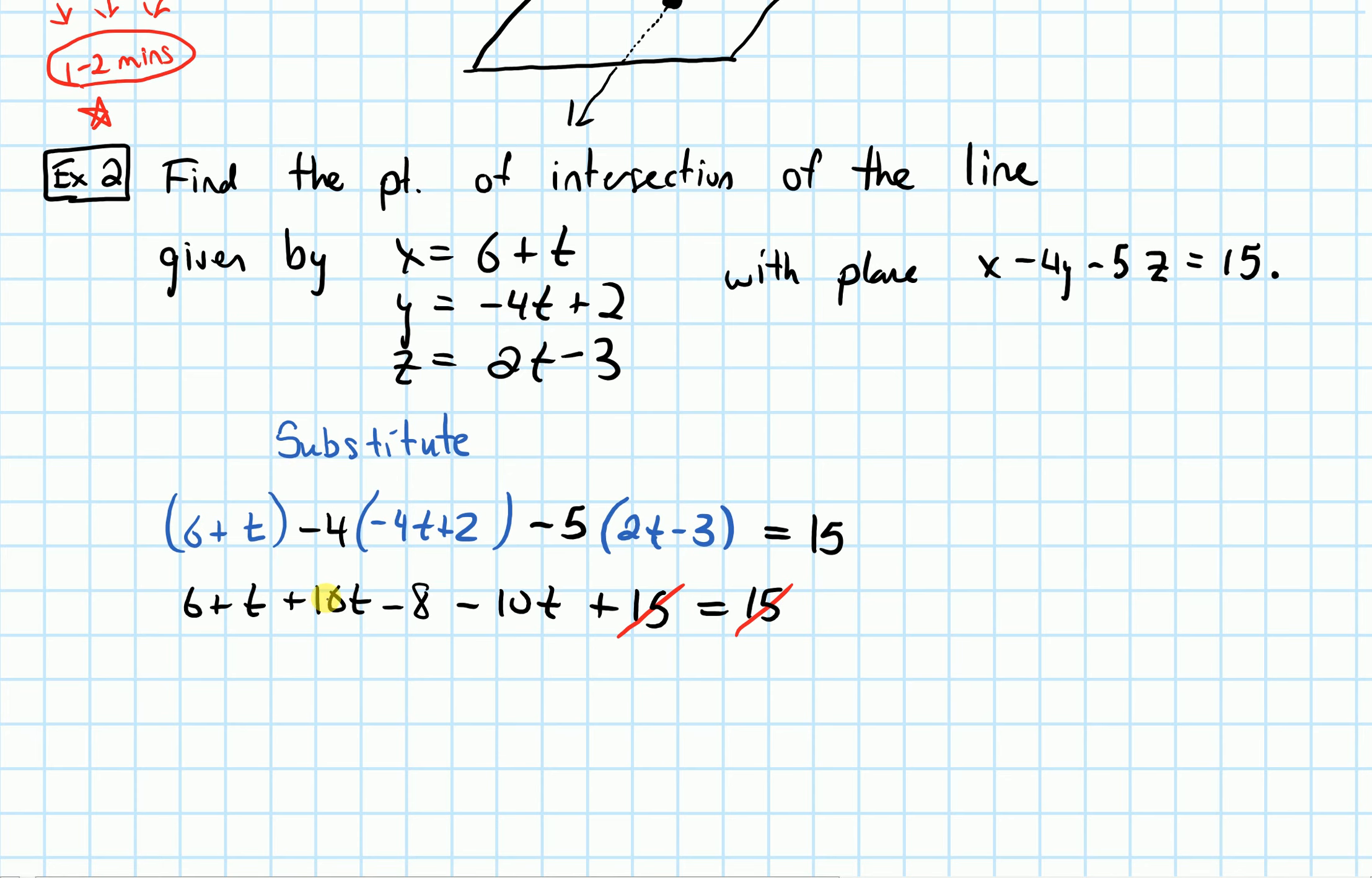we have 16t + t, that's 17t, minus the 10t, so all the t terms will end up giving me 7t. And taking all the constant terms, that's the 6 and this minus 8. If we move them to the other side, we'll get equals 2. And dividing by 7, we get t = 2/7.